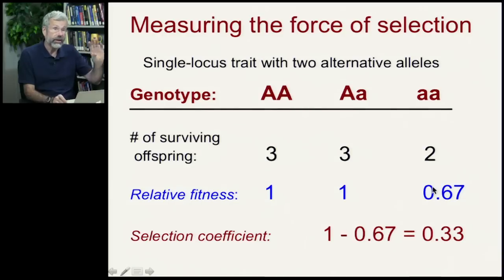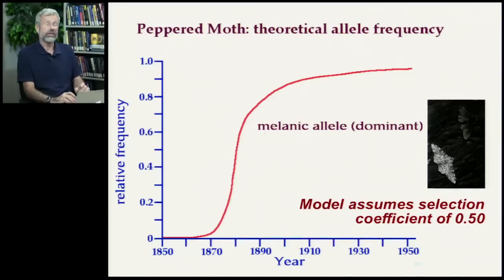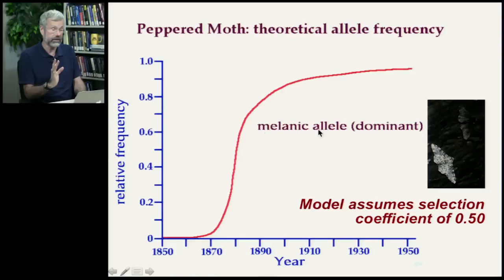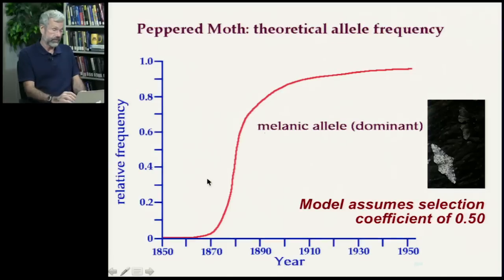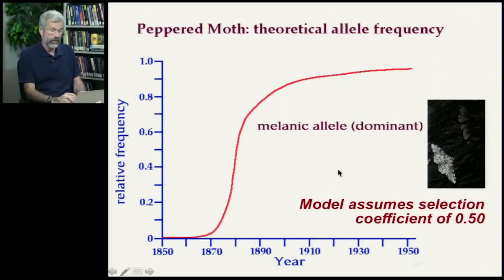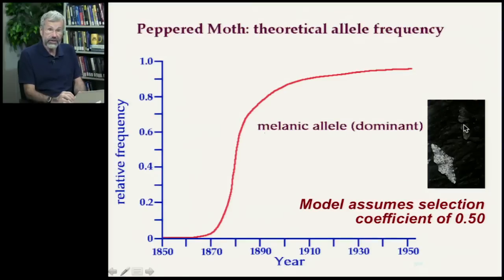When I showed the example of Biston betularia, the graph estimated what would happen if there was a single melanic dominant allele. To get a change this rapid — going from virtually no black moths to almost everybody having the melanistic form within just 40 years — the selection coefficient must have been about 0.5, or about 50%. That means these individuals were twice as likely to have surviving offspring as the speckled individuals. That's a really, really big advantage.